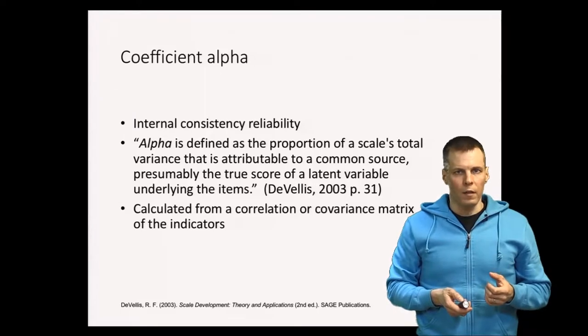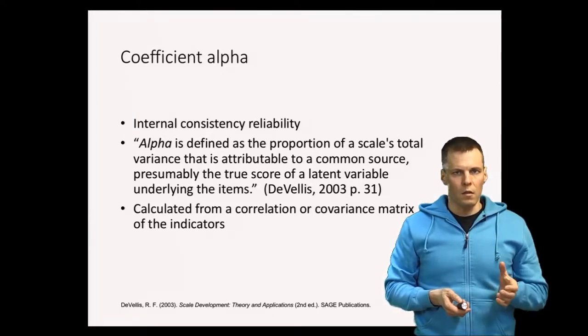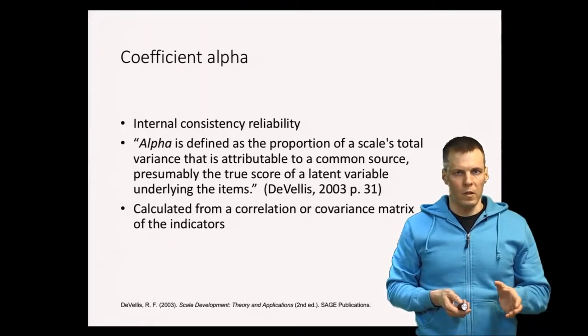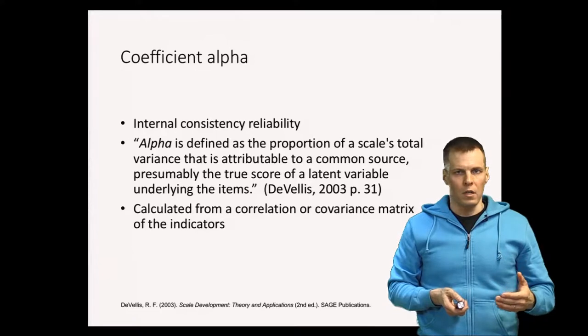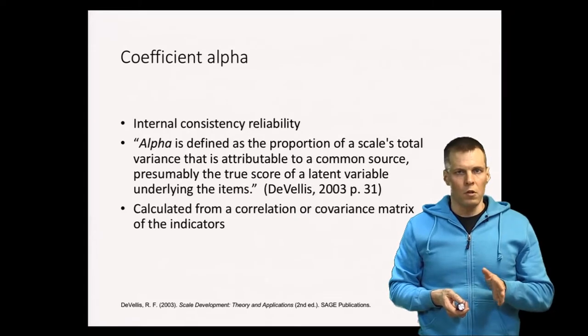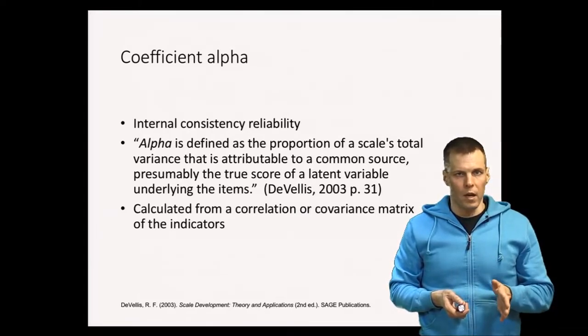Coefficient alpha quantifies the reliability of a scale score calculated as a sum of the scale items. So if you have a scale of five items or five measures that are supposed to measure the same thing and then you take a mean or a sum of those five items, then alpha quantifies the reliability of that sum.